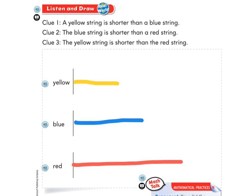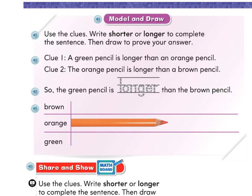Now on page 520, up here it says: use the clues, write shorter or longer to complete the sentence, then draw to prove your answer. Clue one: a green pencil is longer than an orange pencil.